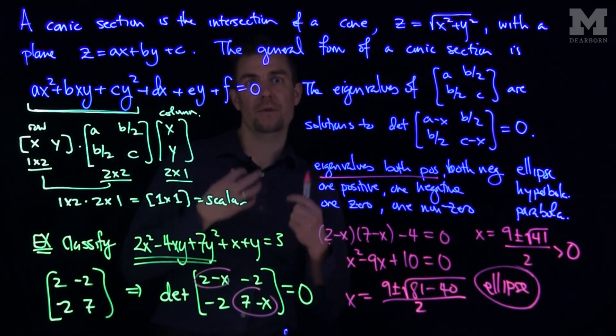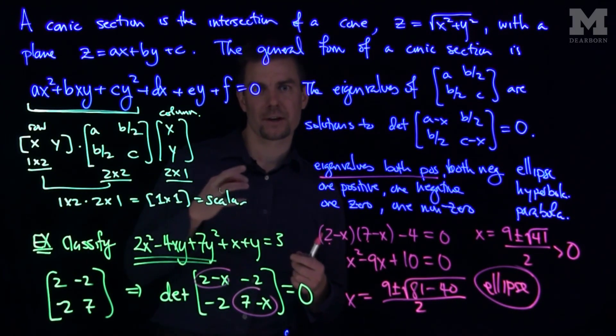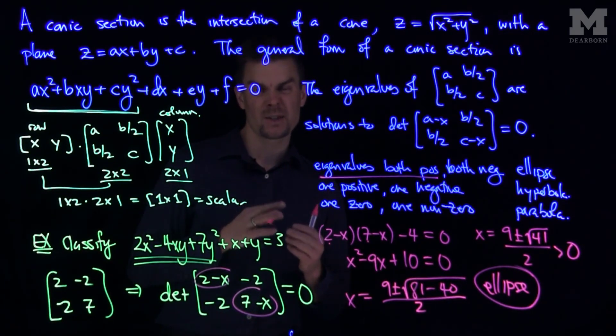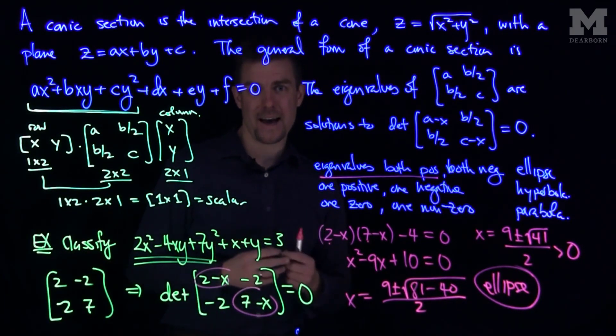You can dive a little bit deeper into this and see that if you can find something called the eigenvectors of this matrix, the eigenvectors of this matrix will be the principal axes of that ellipse. Thank you very much.